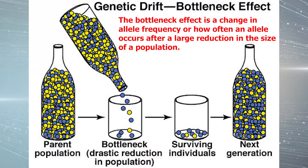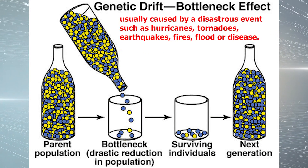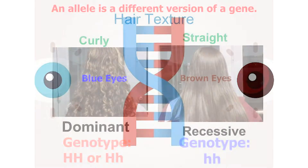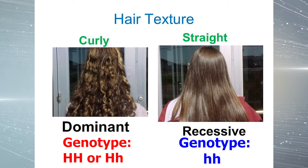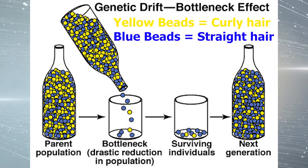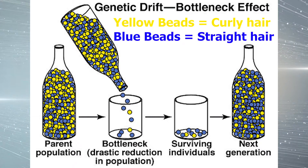Let's dive into the bottleneck effect first. The bottleneck effect is a change in allele frequency — or how often an allele occurs — after a large reduction in the size of a population, usually caused by a disastrous event such as hurricanes, tornadoes, earthquakes, fires, flood, or disease. An allele is a different version of a gene. Let's use hair type as an example. Yellow beads represent curly hair and blue beads represent straight hair in a population of people in a town called Hairville in this picture illustration.